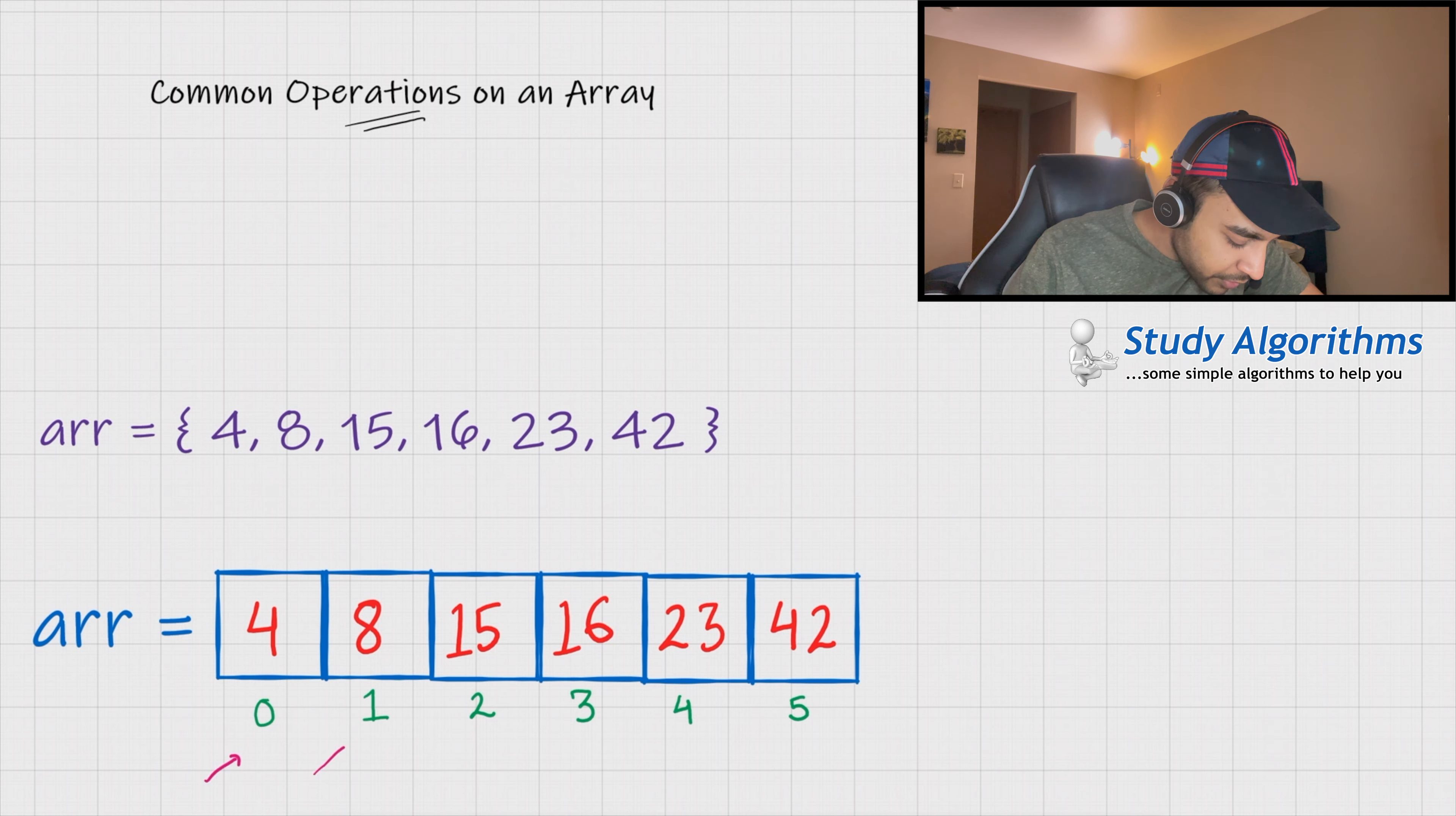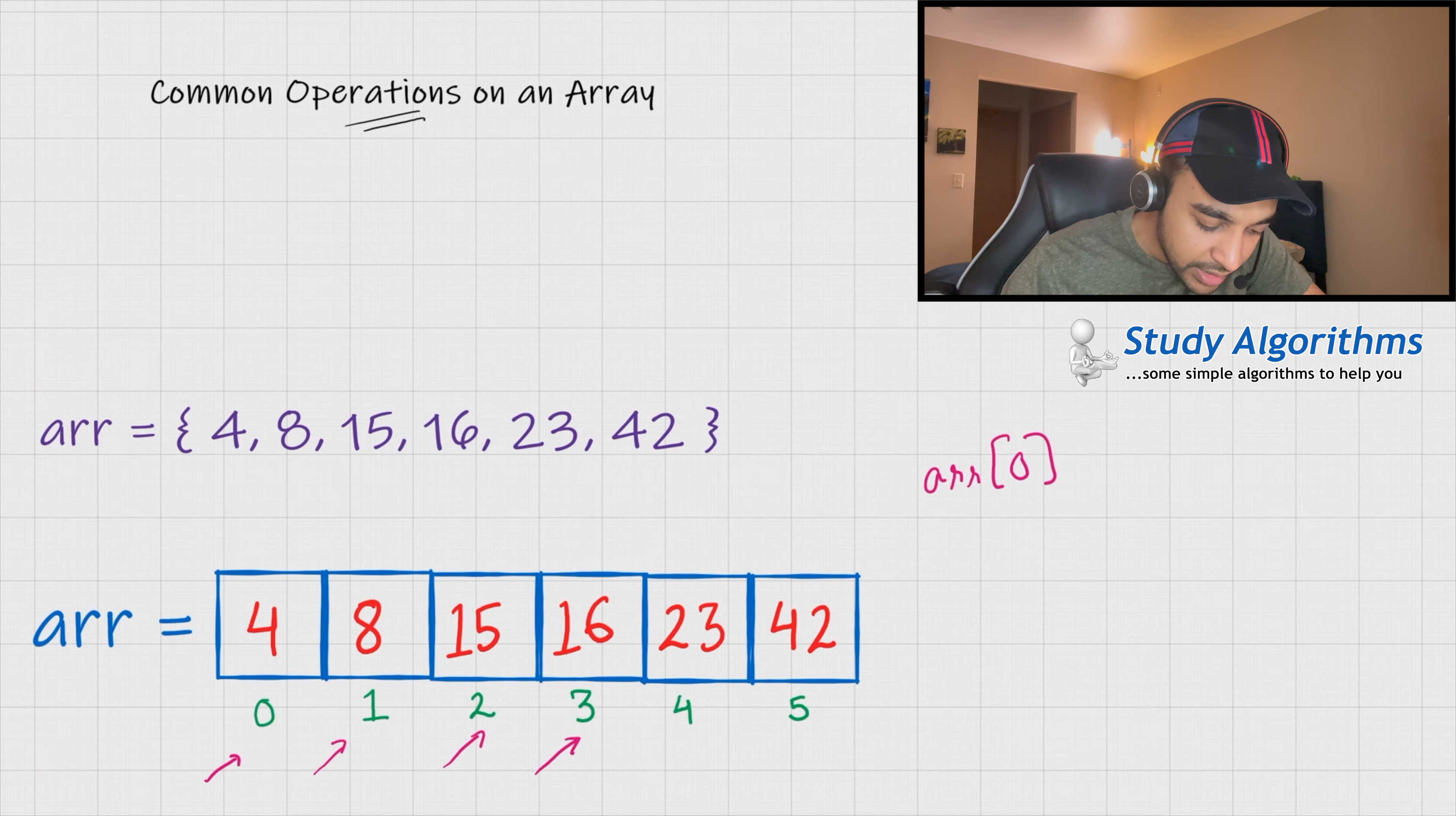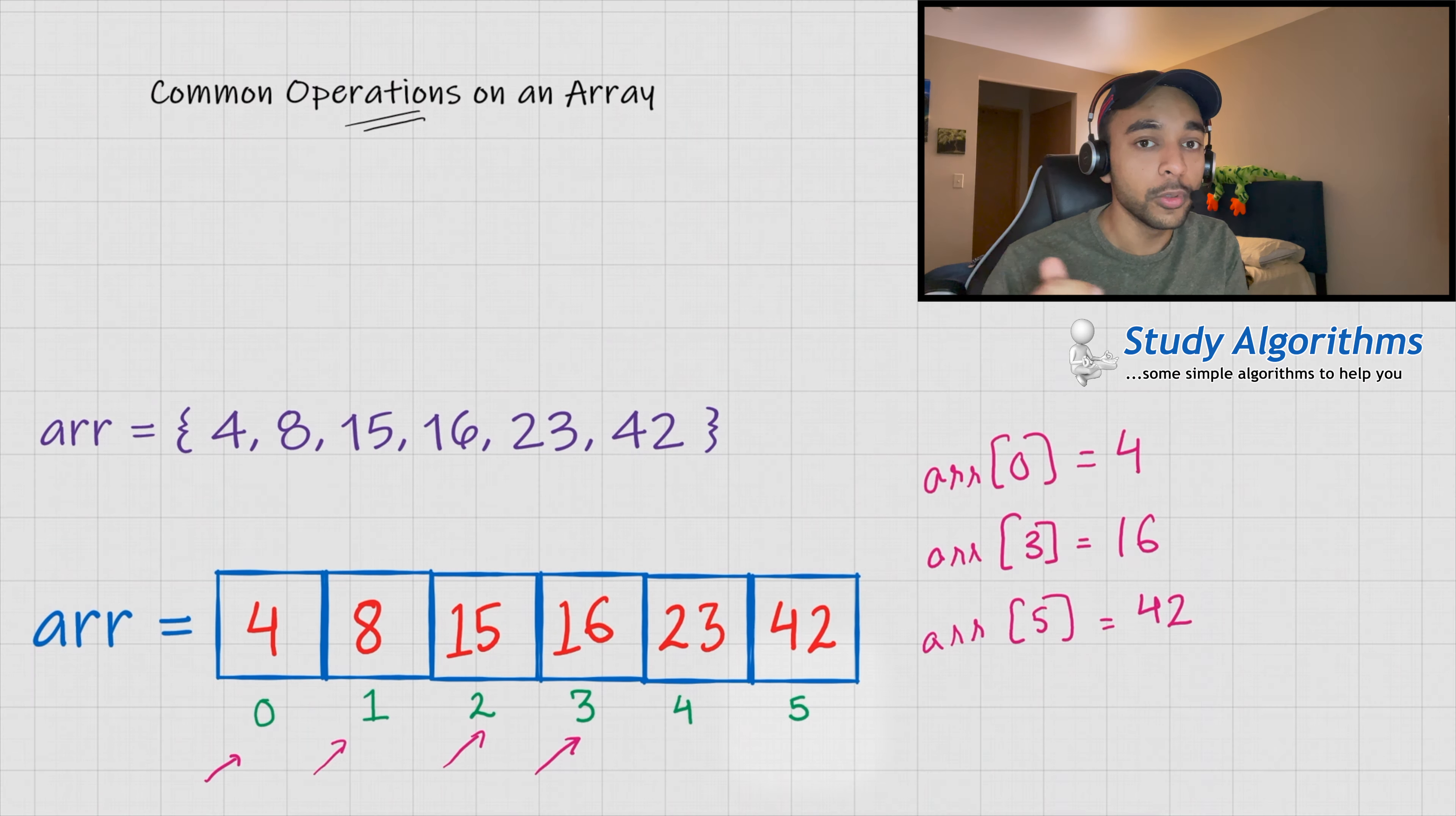So, if you look closely, each of these elements have an index assigned. So, index 0 would point to 4, index 1 would point to 8, index 2 would point to 15, index 3 would point to 16 and so on. Now, this array has a size of 6 because you have 6 elements in the array. So, how do you access any of the element? Now, you can access these elements based upon these indexes. So, if you do something like arr at 0, this will give you the value 4. If you say arr at 3, this would give you the value 16. And similarly, if you want the last element, you can say arr at 5. And this will give you the value 42.